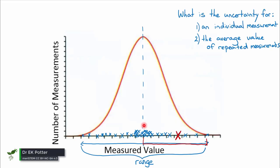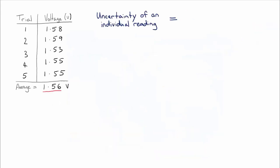To work out the uncertainty on a single measurement, any single measurement is likely to be within half the range of the average value. That's actually a pretty simple calculation. The uncertainty of an individual reading is just half the range.